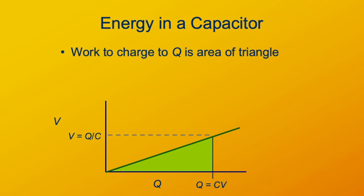The area of the triangle is going to be half the area of the rectangle. That's a height V and a length Q. So that's just going to be one half Q times V.